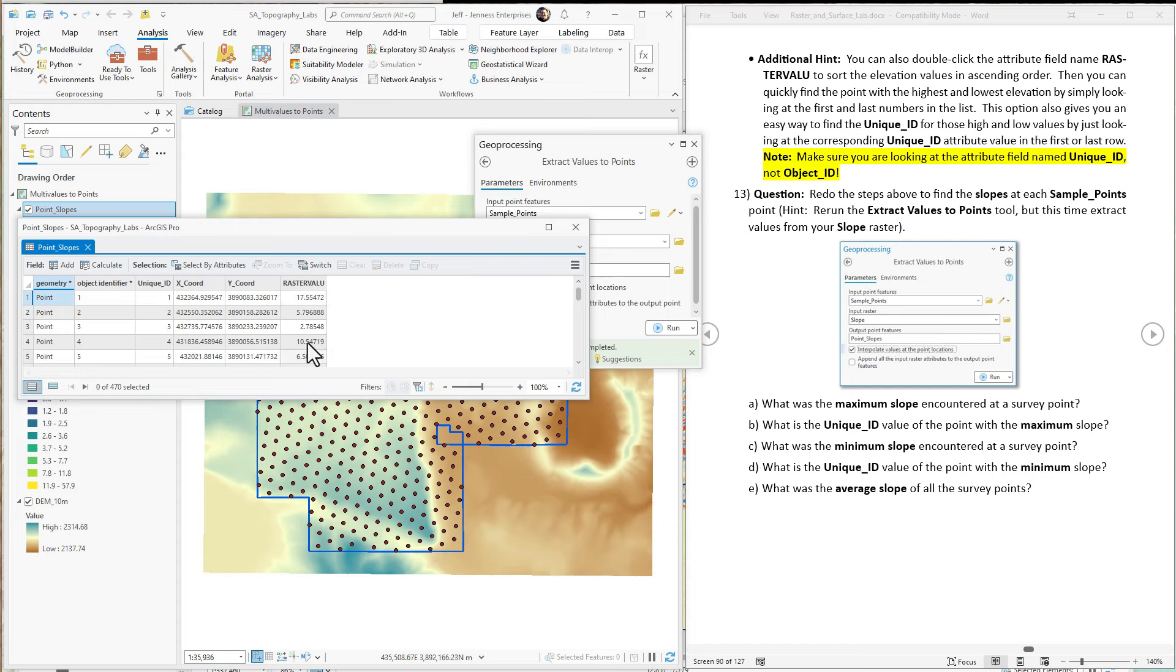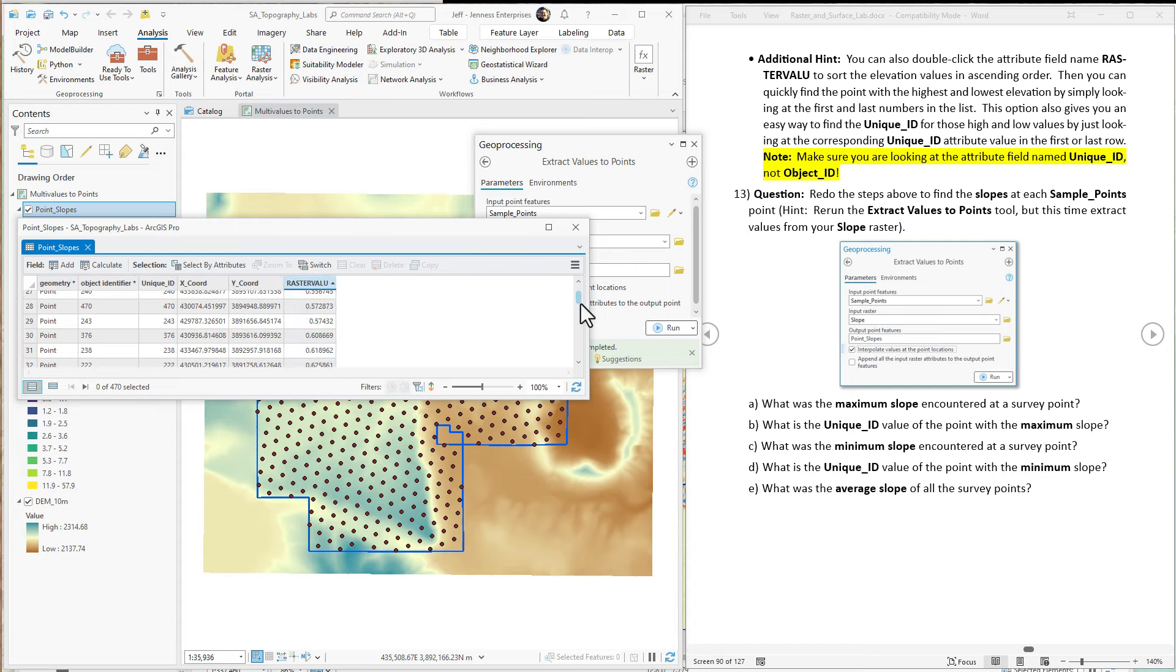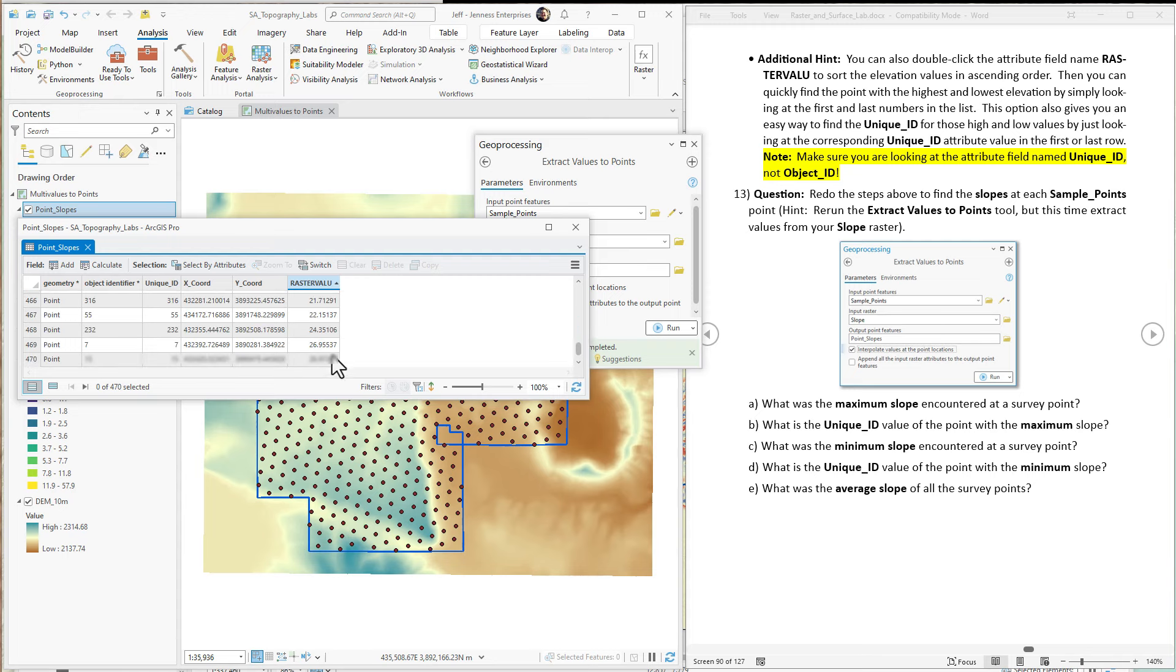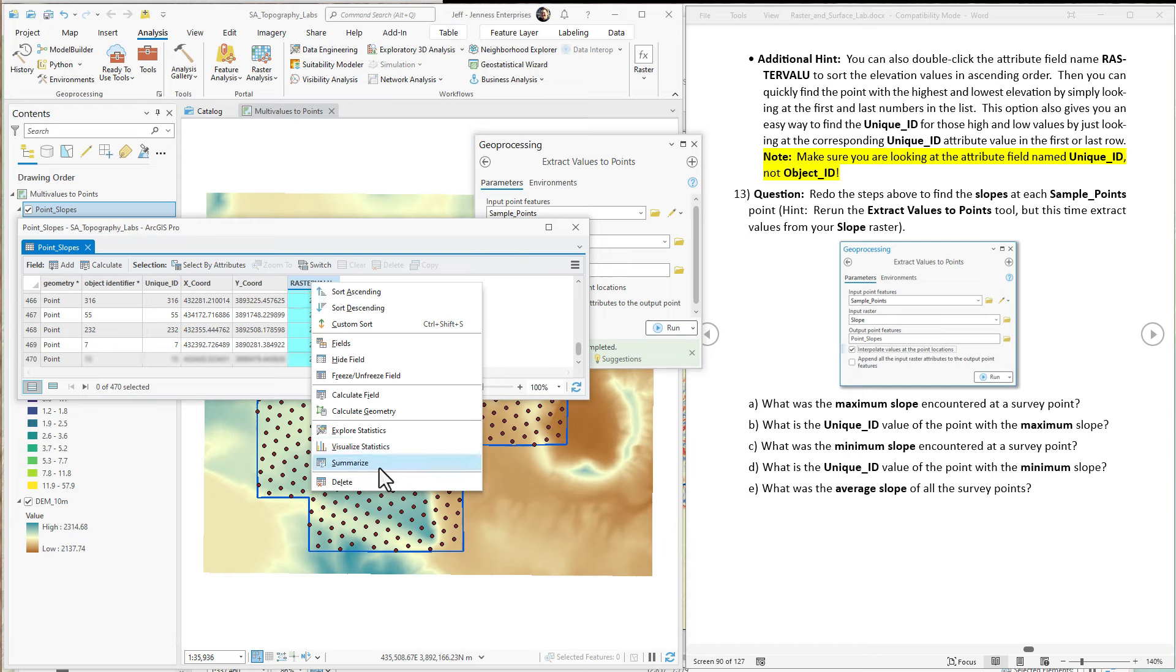So maximum slope. We just sort these by ascending or descending. There's our minimum slope. Scroll down to the bottom. Here's our maximum slope. And the average is just right click and go to visualize statistics again. Easy enough.